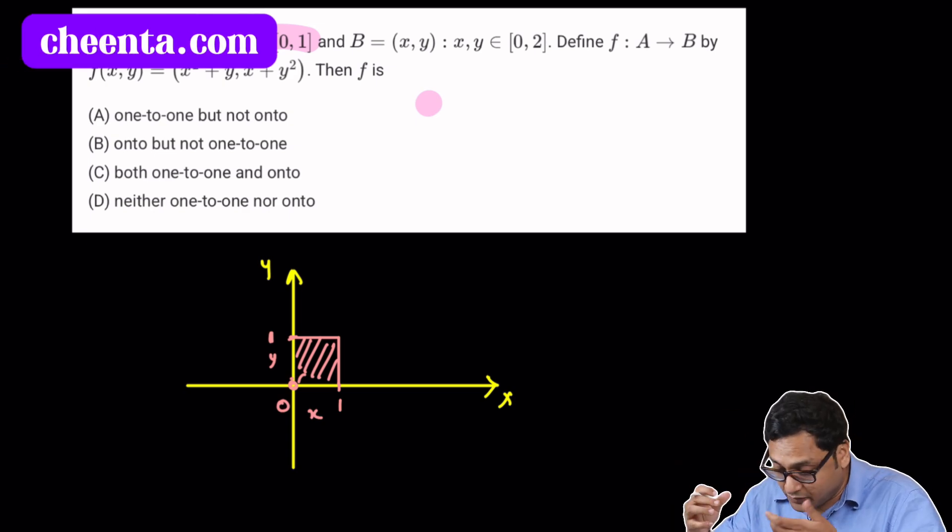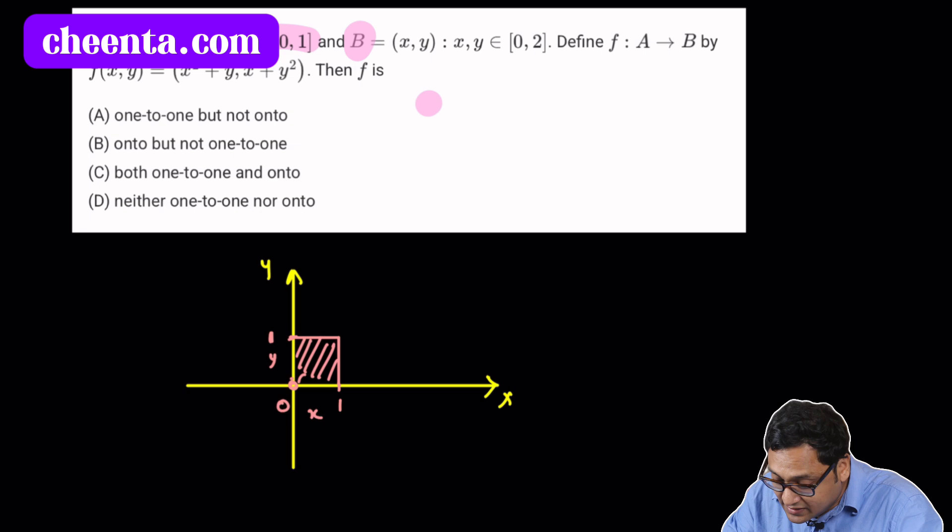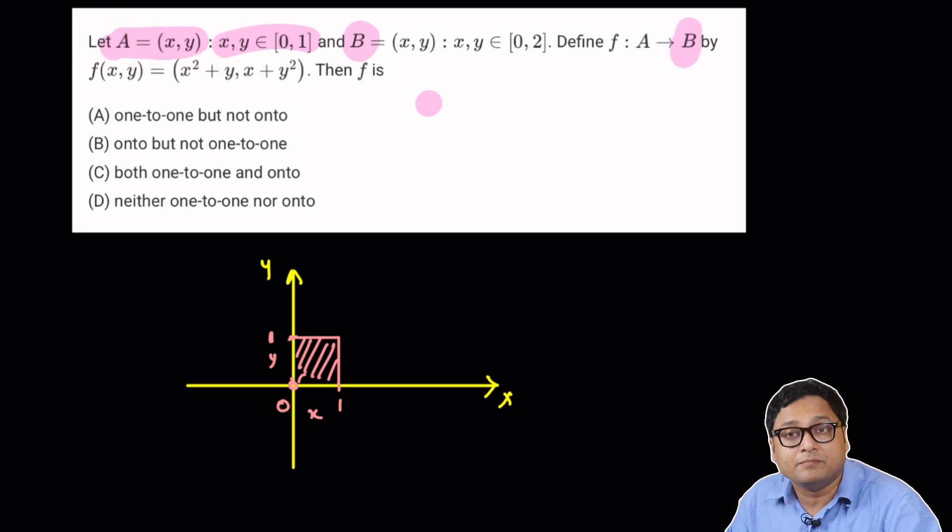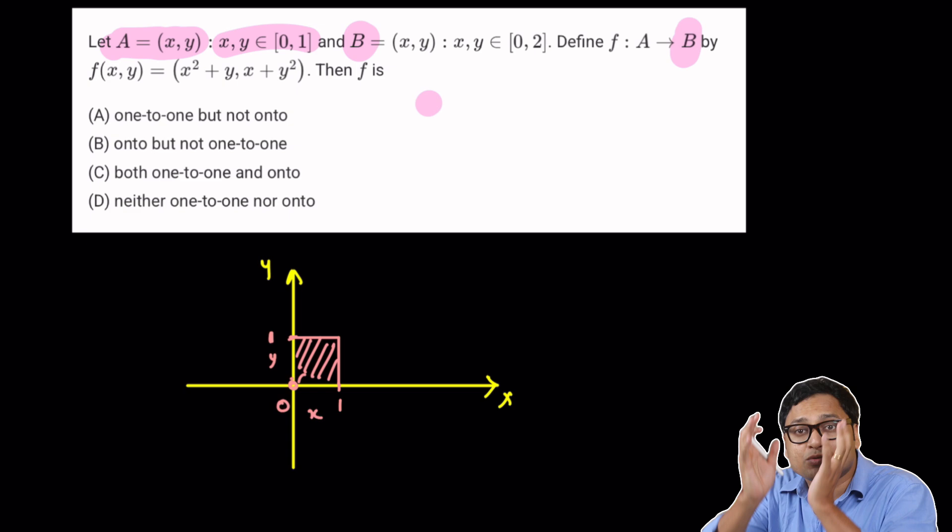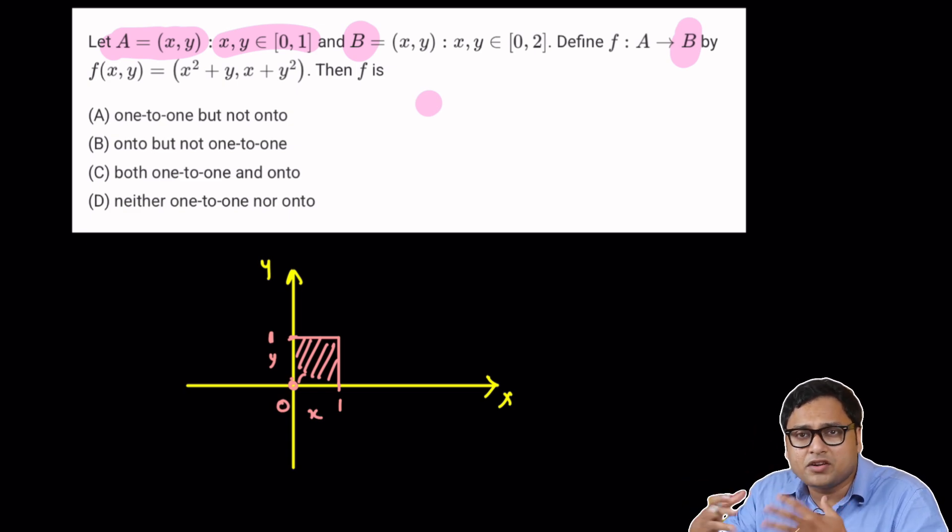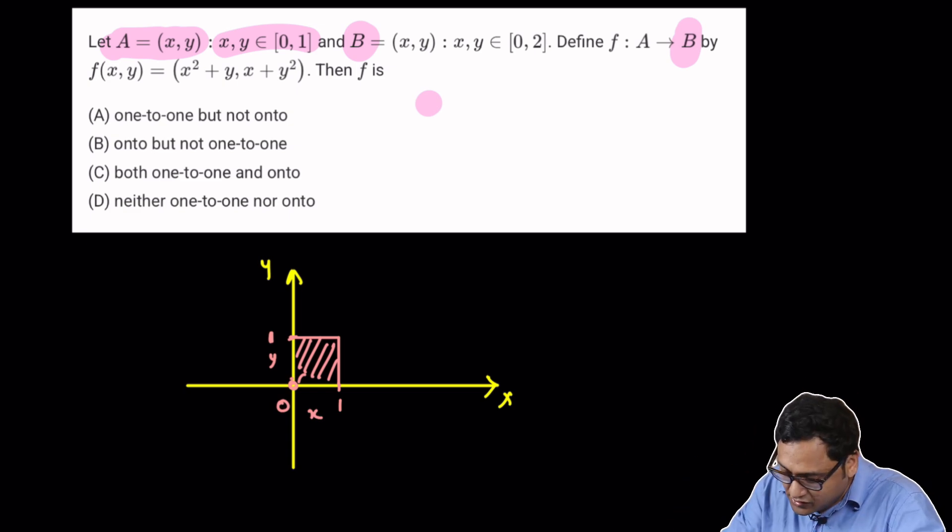Now, what is the co-domain of the function? Well, it talks about the set B, which is the co-domain. And what is the co-domain? It contains all x, y coordinates such that x is between 0 and 2 and y is between 0 and 2. So really, it's a bigger box.